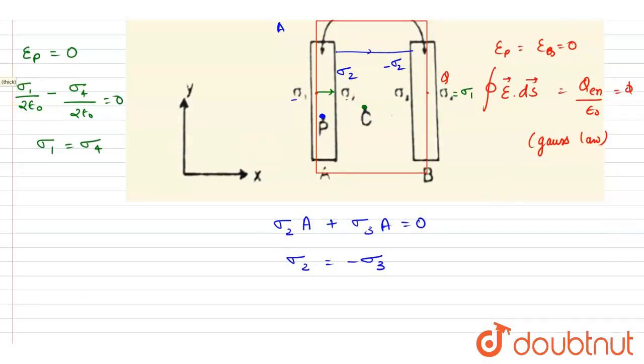So the electric field will be σ₂/ε₀. The electric field between the plates is E, so it is